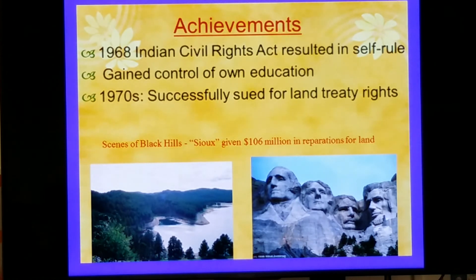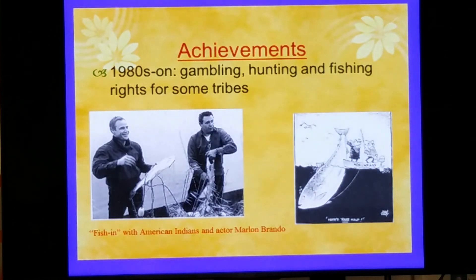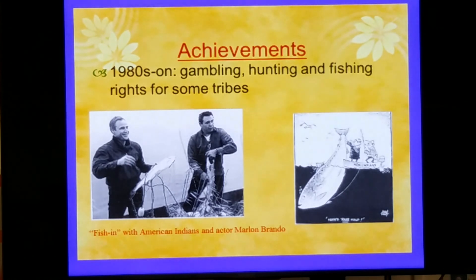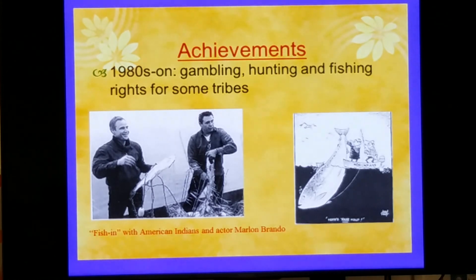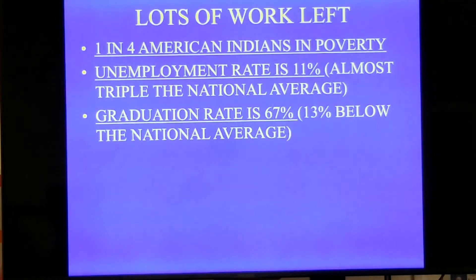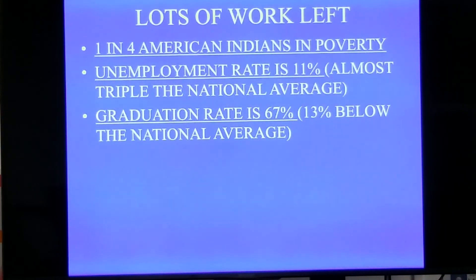If you ever go to Mount Rushmore, there's a very large Indian history museum there as well. In the 1980s and on, tribes won gambling, hunting, and fishing rights to make money. Traditionally, many tribes made their living hunting and fishing in certain areas. A lot of tribes put up casinos to make money for tribal members — some have done it very well and equitably, others less so. Still, one in four American Indians lives in poverty, higher than the national average. Their unemployment rate is triple the national average, and their graduation rate is 13% below the national average. There's still a lot of outreach and work to be done.